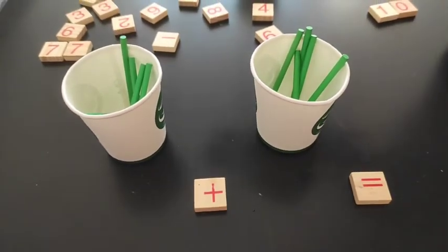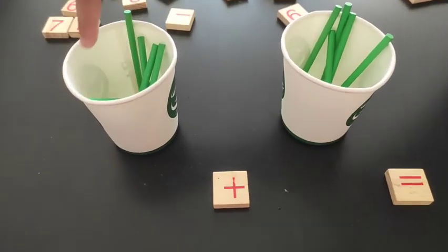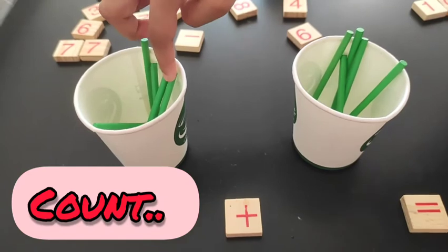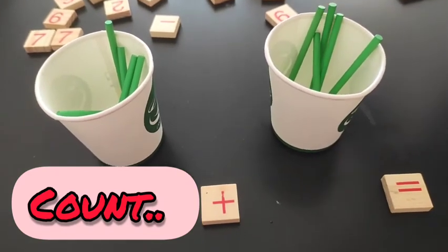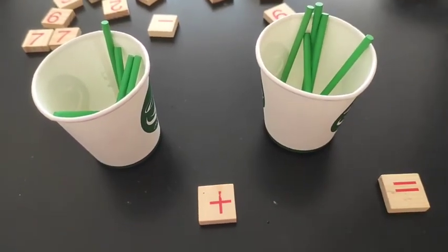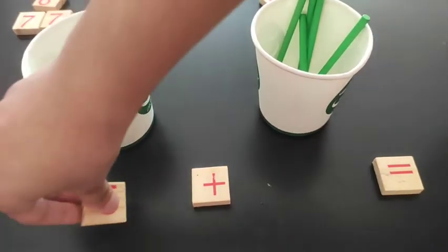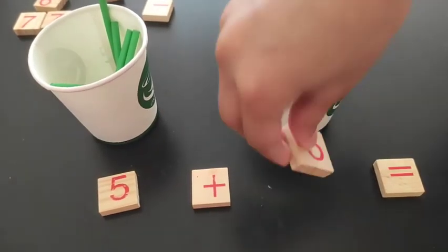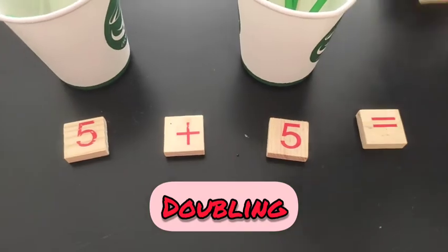Now, we are going to double the sticks. One, two, three, four, five, six, seven, eight, nine, ten. It means five plus five equals ten.